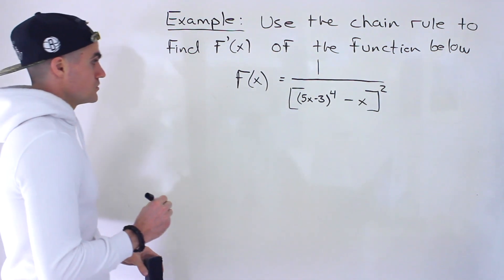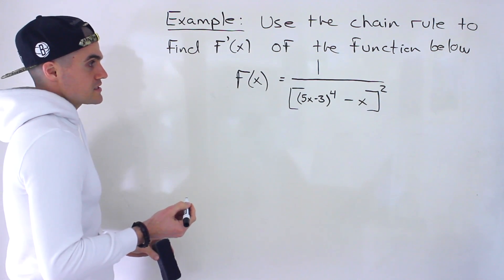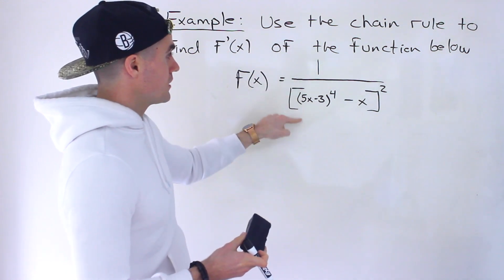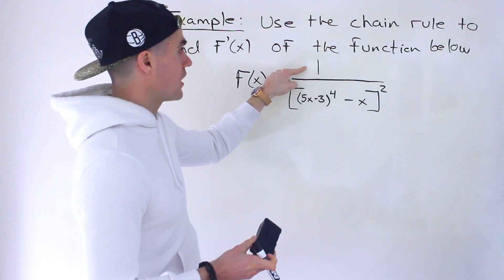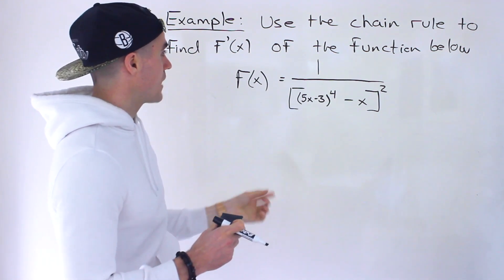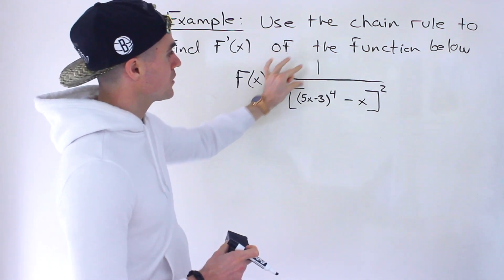So there are different ways you can go about this. You can notice that this is a quotient of functions, even though this is just a constant up here, so you could maybe use the quotient rule. I personally wouldn't do that. Whenever I have just a constant up here, what I like to do is bring whatever's down here in the denominator up to the numerator.